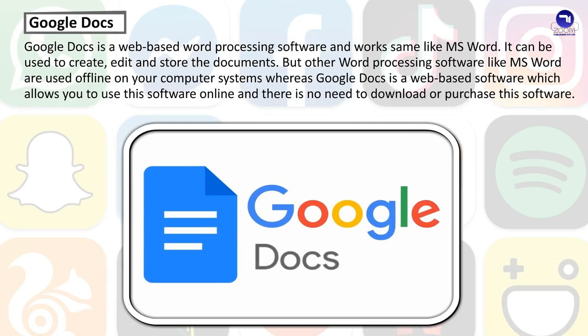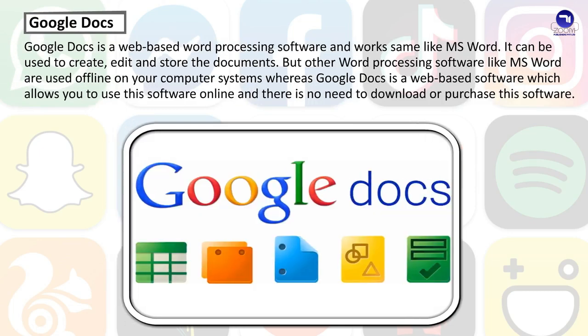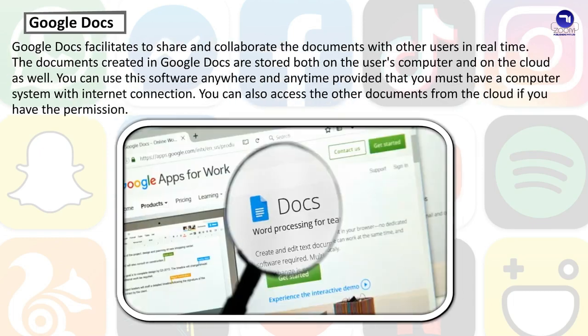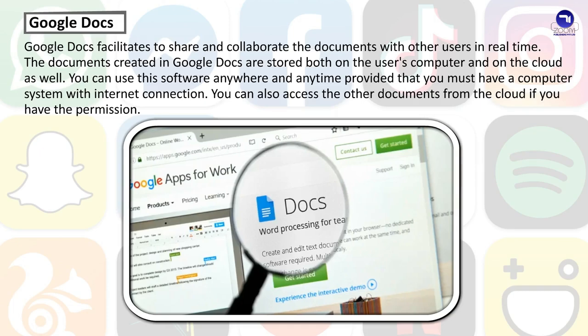Google Docs is a web-based word processing software and works the same as MS Word. It can be used to create, edit, and store documents. Unlike MS Word, which is used offline on your computer, Google Docs is web-based, allowing you to use it online with no need to download or purchase the software. Google Docs facilitates sharing and collaborating on documents with other users in real time. Documents created in Google Docs are stored both on the user's computer and on the cloud. You can use it anywhere and anytime, provided you have a computer with an internet connection, and you can also access other documents from the cloud if you have permission.